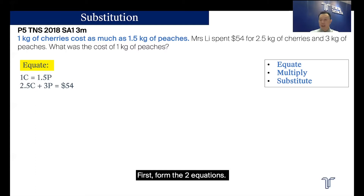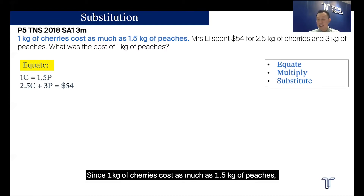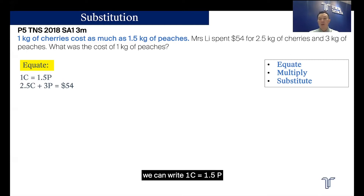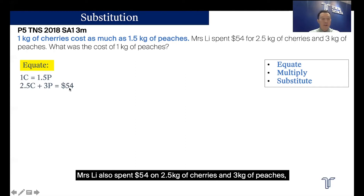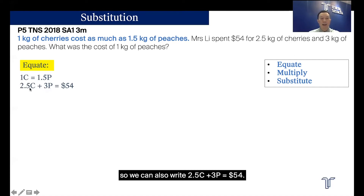First, form the two equations. Since 1 kg of cherries costs as much as 1.5 kg of peaches, we can write 1c = 1.5p, where c refers to cherries and p refers to peaches. Mrs. Li also spent $54 on 2.5 kg of cherries and 3 kg of peaches, so we can write that 2.5c + 3p = $54.